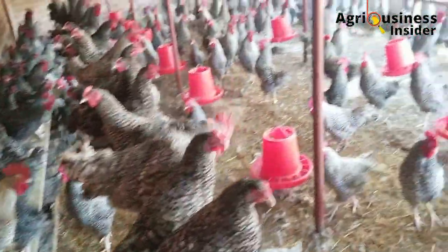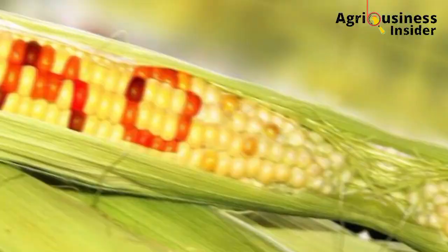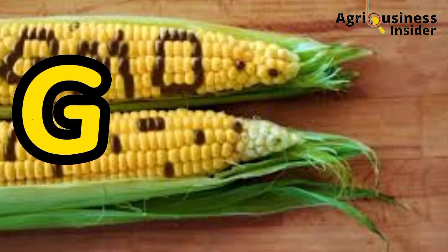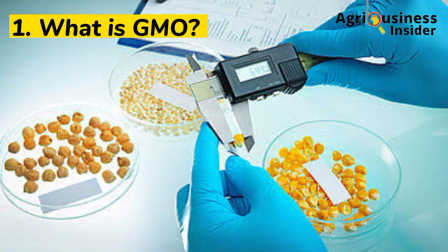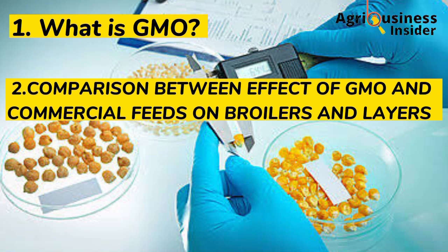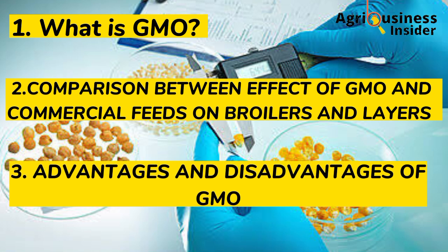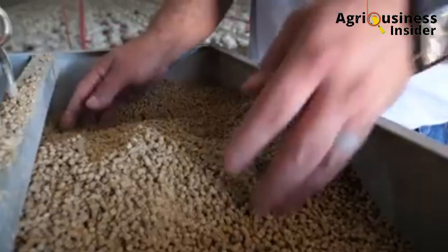In today's video I want to touch on a very sensitive topic: genetically modified organisms, the GMO. I will discuss what genetically modified organisms are and, specifically, what genetically modified plants are — how these GM plants like corn and soybean used in poultry feed affect layer and broiler chickens compared to commercial feeds. I will also tell you the advantages and the disadvantages or challenges hindering the acceptance of GM plants in some countries.